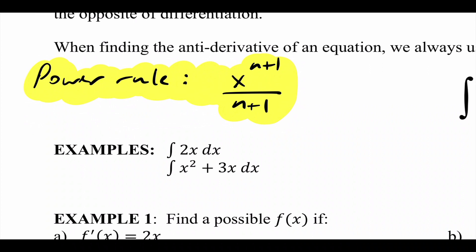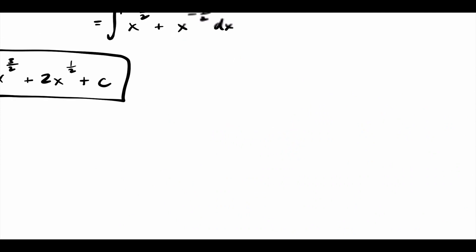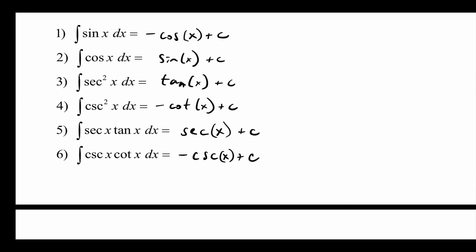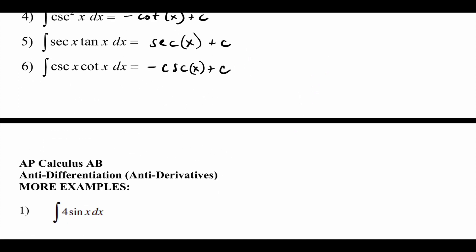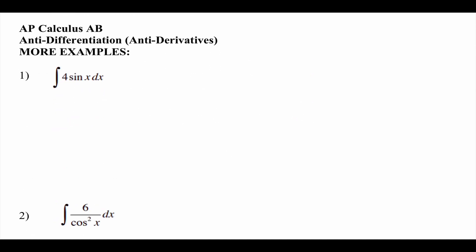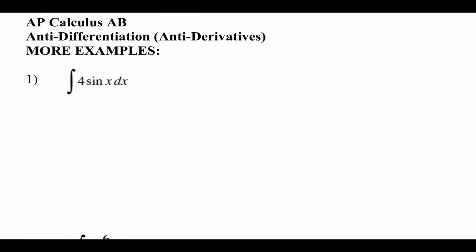The last thing we talked about was trig functions — they just go in the opposite direction. If you find the derivatives of the functions listed in black, the derivatives would be the ones shown, so we're just going in the opposite direction. Okay, let's look at the next page.